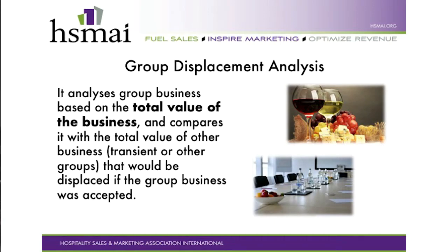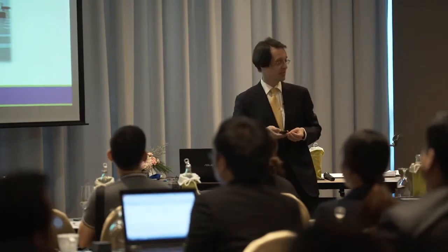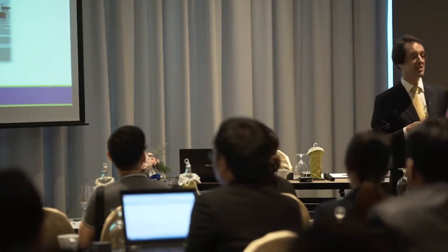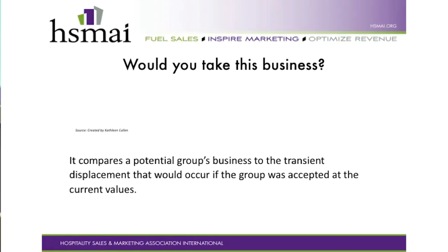Group displacement involves groups that would be displaced if the group business was accepted. Groups can be from any size depending on your hotel. As per international market segmentation, a group starts at 10 rooms or more. Some wholesale contracts still define groups from seven rooms or 15 paying guests, but mostly we say 10 rooms or more.